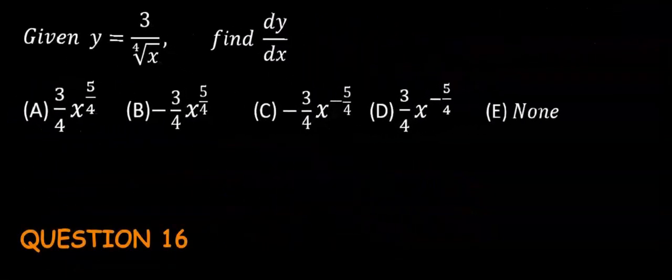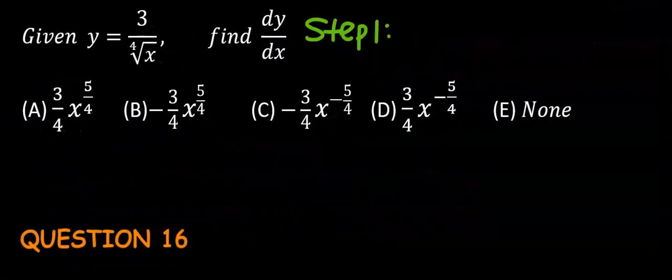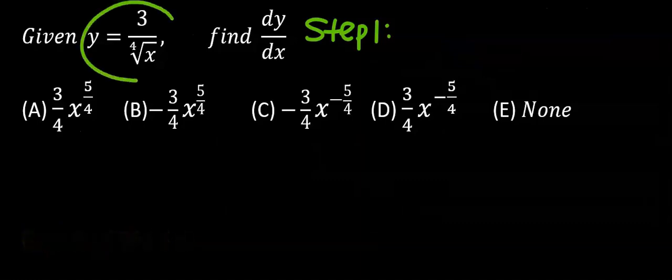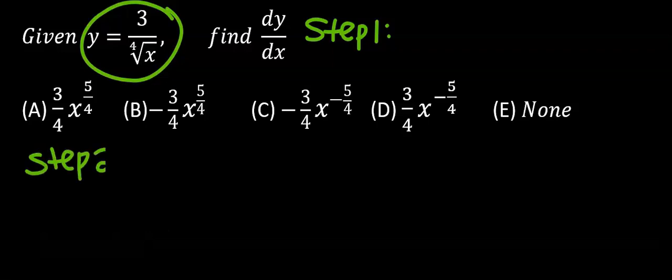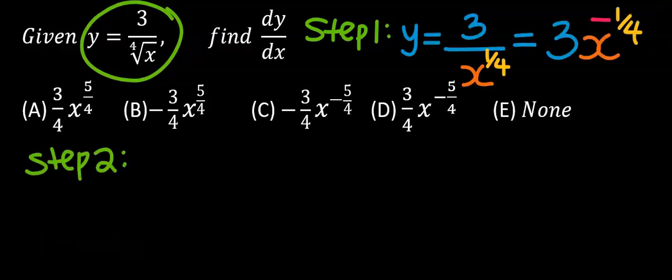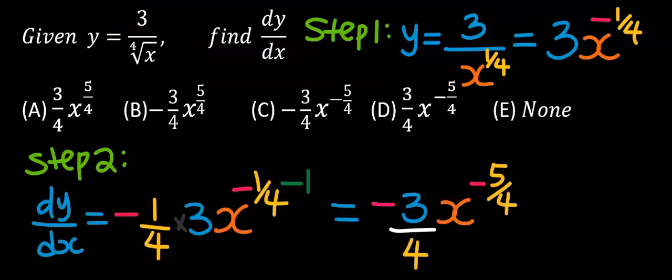Next, consider this question. Step one: rearrange the function. Step two: differentiate. Only the minus one-over-four at the power makes the movement by multiplying 3 and also subtracting one at the power. From the options our answer is C.